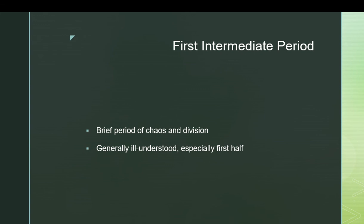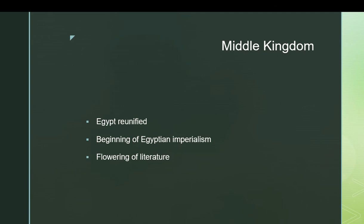We actually have a good number of records from this period — a bunch of those local nobles left behind stelae detailing their victories over one another. But even still, this is not a period where we're getting a lot of art and tomb monuments, so we don't have a really good record like we do of the Old Kingdom — that's why we call it the Intermediate Period, between the periods we understand very well. Eventually, one of those local nobles, a man named Mentuhotep II, ends up reuniting Egypt. He founds what is treated as a continuation of the Old Kingdom by himself and his contemporaries, but which is functionally a new state: the Middle Kingdom.